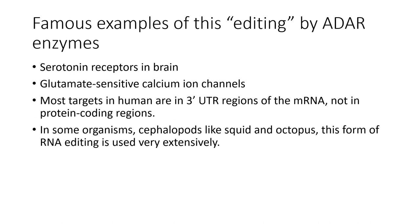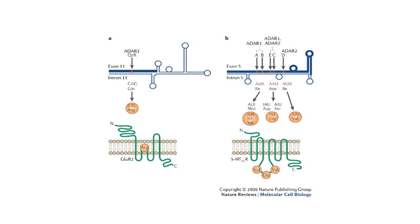In humans, most editing sites are not in coding regions but more likely in three-prime untranslated regions, where they impact binding of microRNAs. However, in some organisms — notably squid and octopus — this form of editing is used extremely extensively. The editing substrate is a double-stranded RNA: in these examples, the exon is base-paired to the adjacent intron, so editing must occur before splicing while the intron is still present. This double-stranded structure guides ADAR to the site to be edited, resulting in amino acid changes in the eventual protein produced.